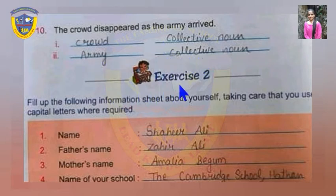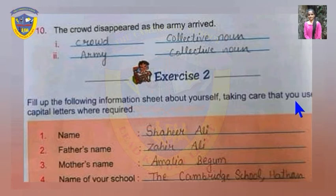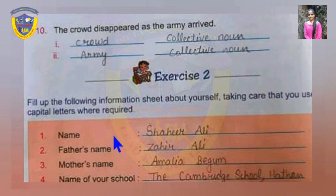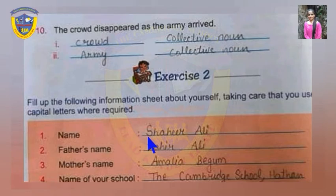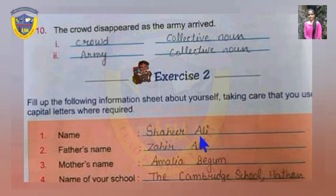Next, Exercise two: fill up the following information sheet about yourself, taking care that you use capital letters where required. You have to fill in personal information about yourself, but take care of the capital letter of each word. For example, for your name, I have written 'Shahir Ali' — you write the first letter of your first name and surname in capital.